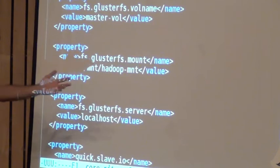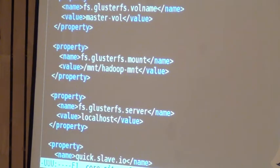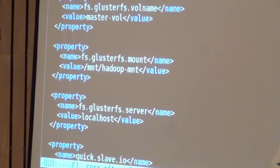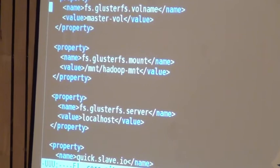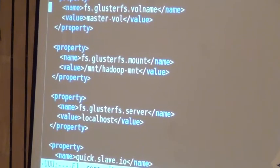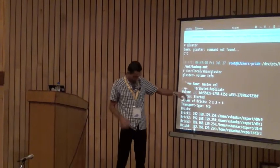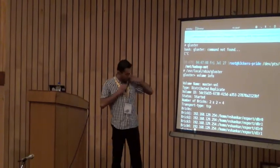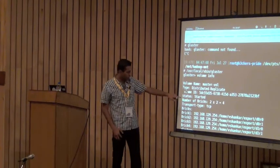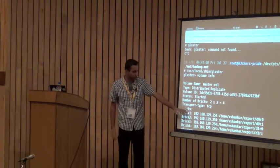This is the volume name. Anyone who has used GlusterFS knows you can create a volume — it can be distribute, distribute-replicate, or distribute-stripe. To create a volume you use the GlusterFS CLI. Here I have created a distribute-replicate volume with four bricks.